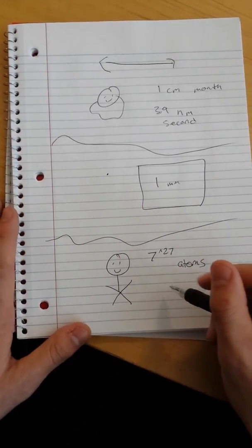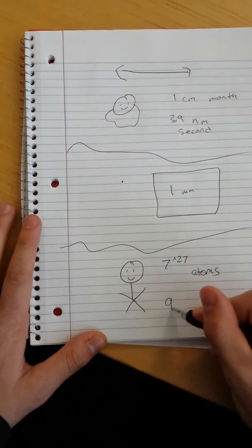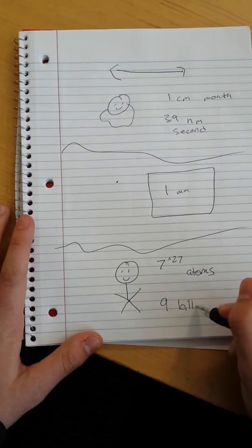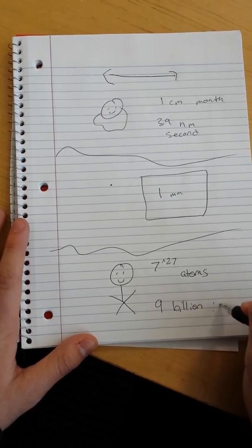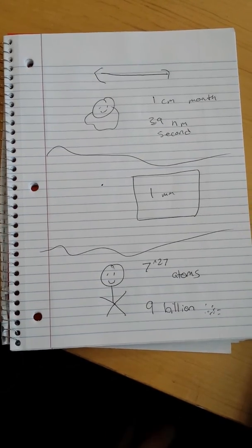a human is actually so big in so many atoms that you might be surprised to find out that 9 billion grains of sand can fit inside your average human. Pretty amazing.